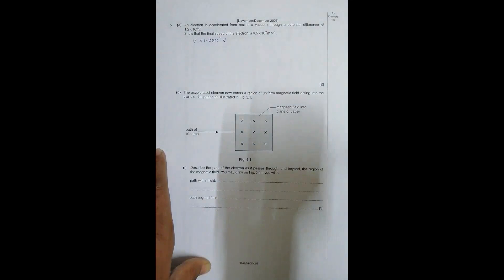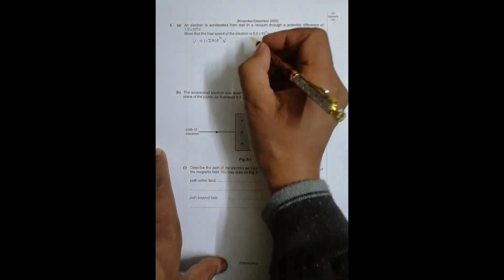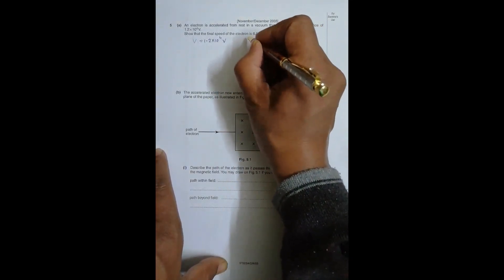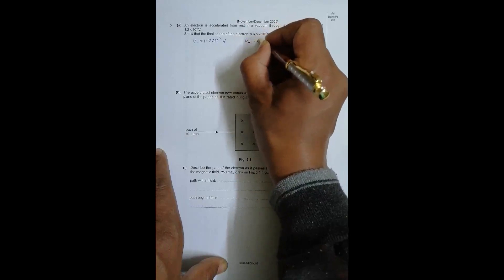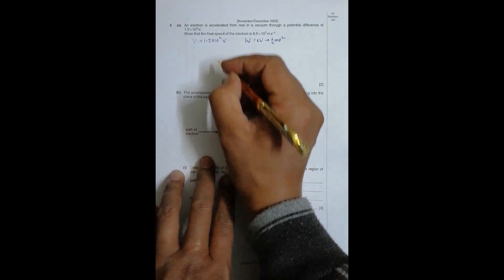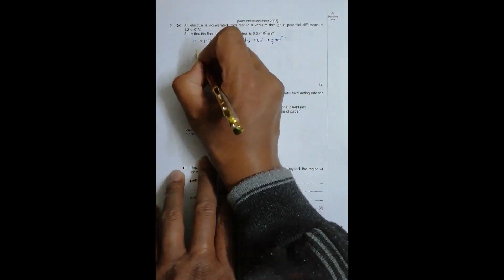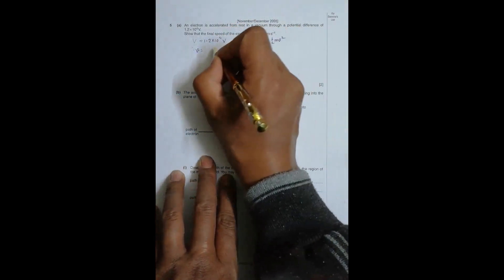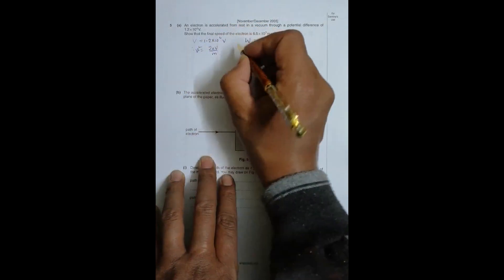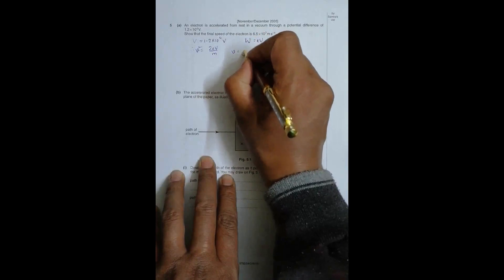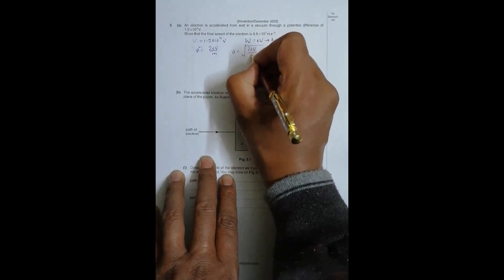The final speed of the electron is 6.5×10⁷ m/s. The work done on the electrons equals eV, which is fully converted into kinetic energy. So the numerical values must be equal: eV = ½mv², giving v = √(2eV/m).